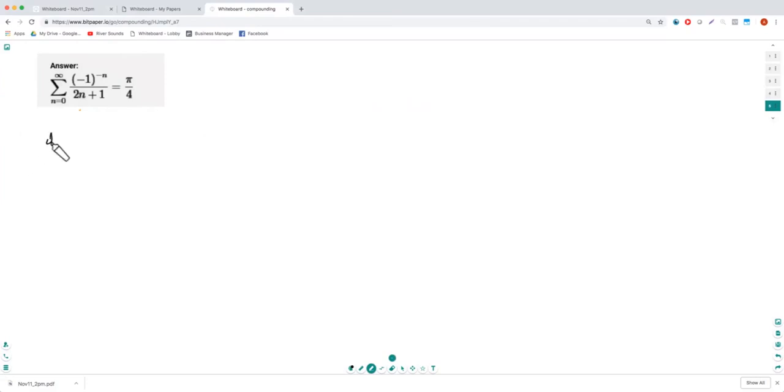We know that d/dx of tan inverse x is equal to 1/(1 + x²). And now this can be written as 1 - x² + x⁴ - x⁶ + x⁸ and so on and so forth. Recall, this is just a geometric series.